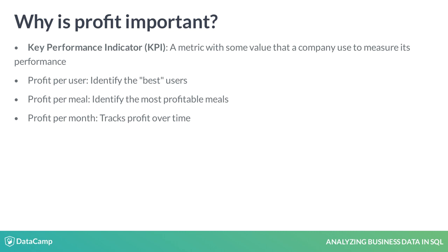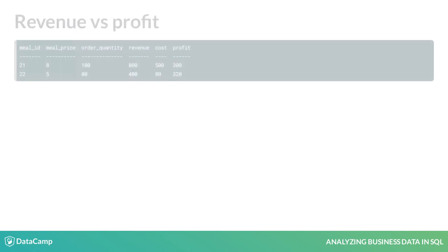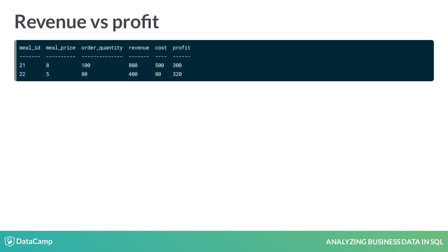Why isn't revenue used instead? Let's explore why through an example. Meal 21 has a price of 8 and has been ordered 100 times, so its revenue is 8 times 100 equals 800. Its total purchase cost is 500. Profit is the difference between revenue and cost, so its profit is 800 minus 500 equals 300.